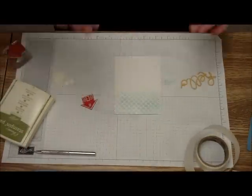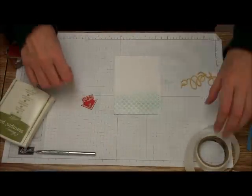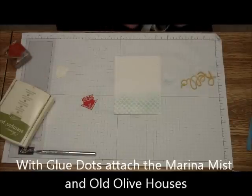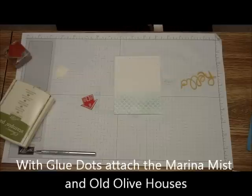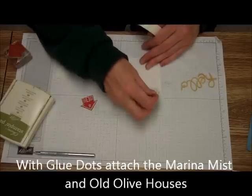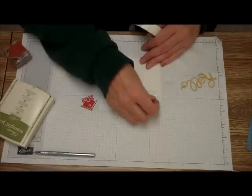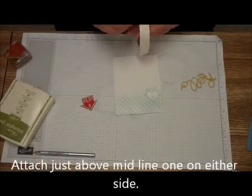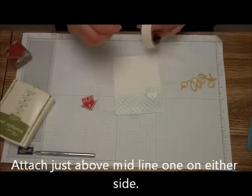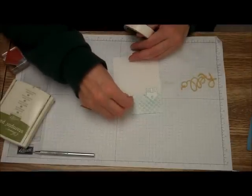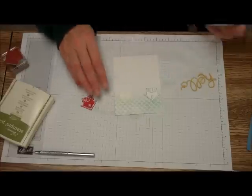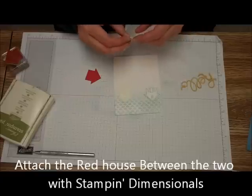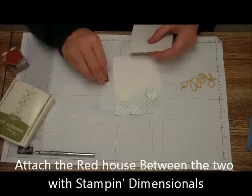Now, what I'm going to do is I am going to, with glue dots, attach the Marina Mist and the Old Olive House. And, just above midline, one on either side. And then with some stamping dimensionals, I'm going to attach the red house.